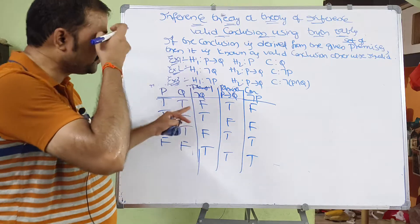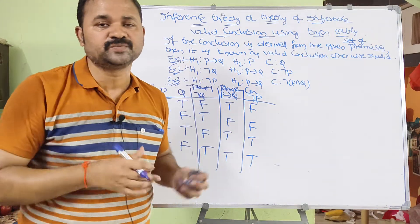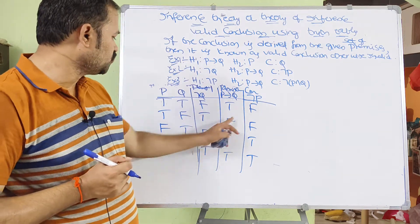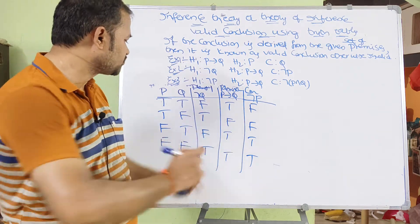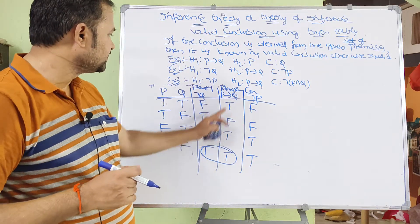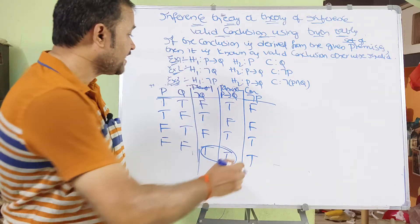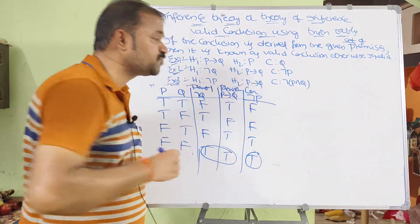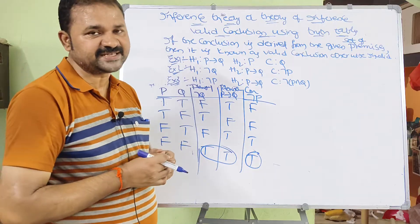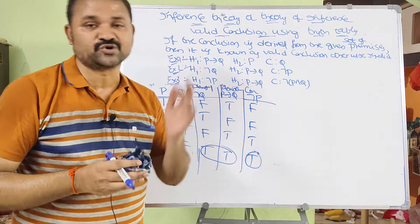Now we observe premise 1 and premise 2. If both are true we check the conclusion. In the row where both premises are true, the conclusion is also true. So the given set of premises are producing a valid conclusion.